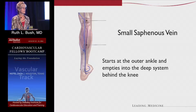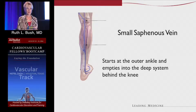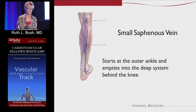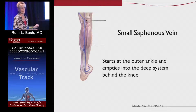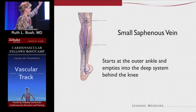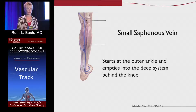The small saphenous vein is one of the axial veins that can have a variable terminus. The great saphenous vein is always going to terminate at the saphenofemoral junction. But the small saphenous vein empties into the popliteal fossa — it can empty a little bit higher on the thigh, or it may not stop at all and just have some perforators to the deep system. If you're treating it, you need to know where it's emptying into the deep system.